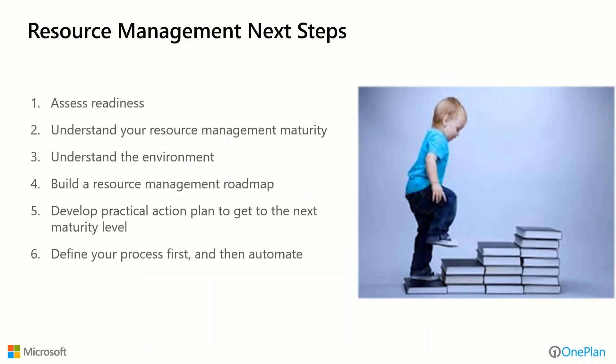The next steps in figuring out where you're at is to assess your readiness and really take baby steps. Understand your resource management maturity internally. Understand your culture — what it will absorb or allow you to accomplish early on, or what might take time to introduce. Build a resource management roadmap: here's what we could do today versus later stages we aspire to. Develop a practical action plan to get to the next maturity level. It's usually best to define a process first and then automate it in a solution, as opposed to trying to automate something that doesn't yet exist.